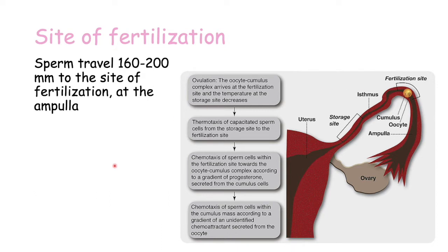The sperm will reach the fertilization site through a combination of its own motility via its tail, and uterine and oviduct contractions, where the uterus and fallopian tube contract to push sperm toward the fertilization site. In addition, we have thermotaxis, the movement of sperm influenced by a change in temperature, and chemotaxis, movement influenced by a chemical gradient — in this case a gradient of progesterone secreted by the egg, which leads the sperm toward it.